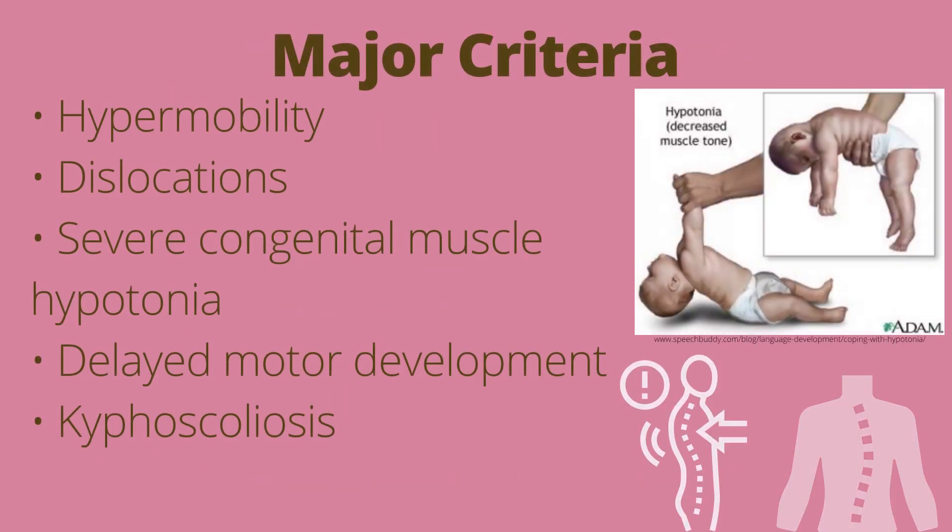Major criteria include hypermobility, dislocations, severe congenital muscle hypotonia, delayed motor development, and kyphoscoliosis, which is the presence of kyphosis and scoliosis. These are spine abnormalities which can be seen in the photo on the right.